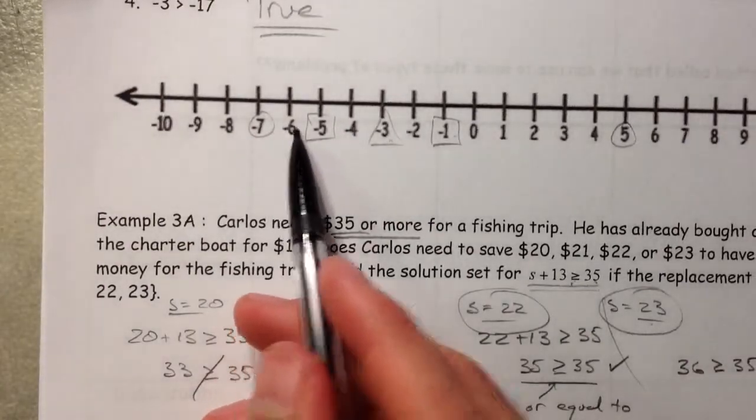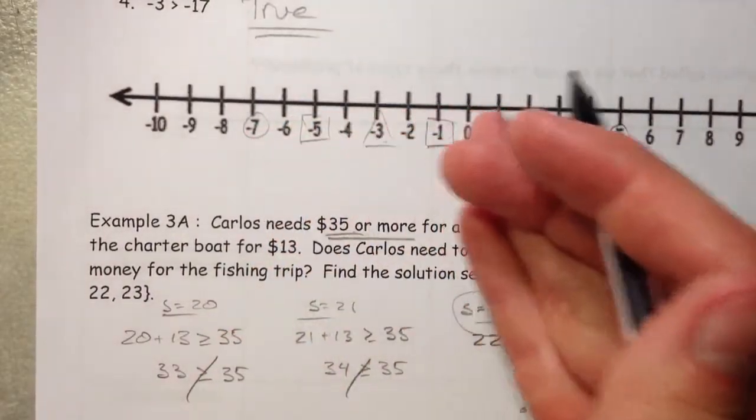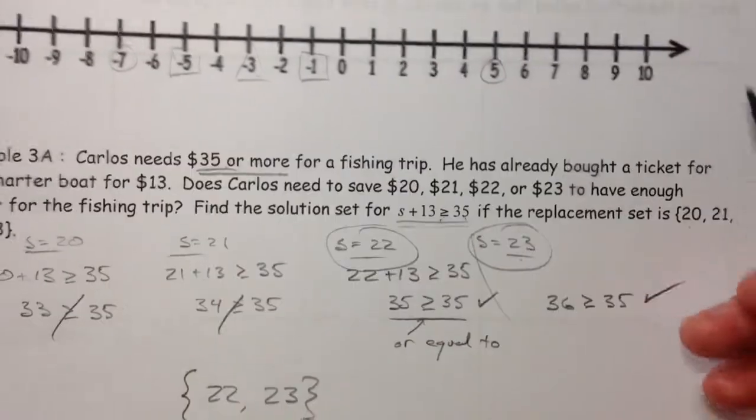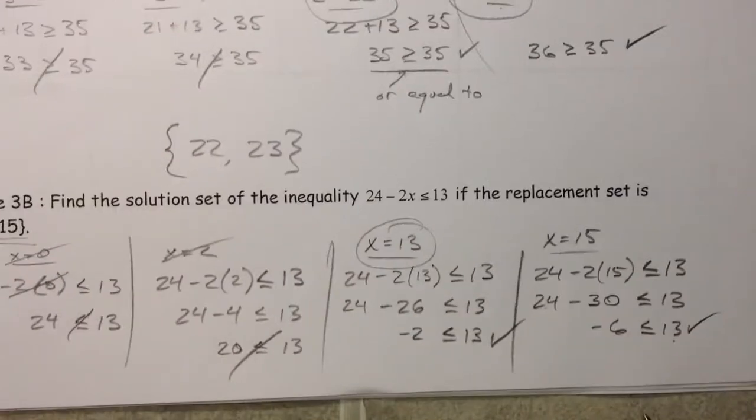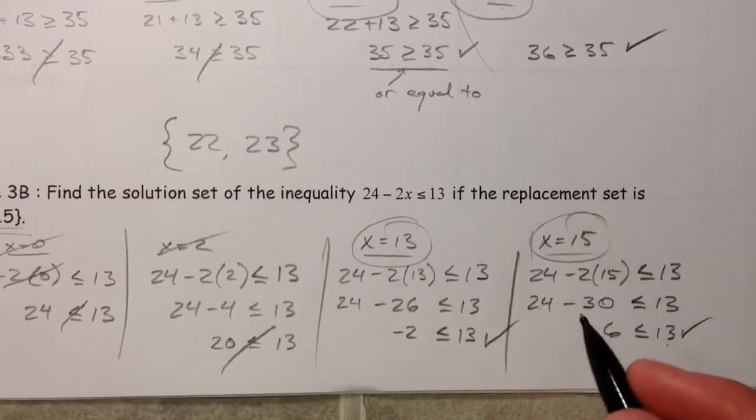Negative 6 is less than 13. So, remember, negative 6 is here, and it is smaller than, all these numbers are smaller than 13, which is way over here off this number line. So, this one checks out. And 15 is part of our solution set.